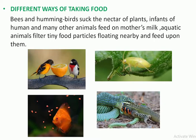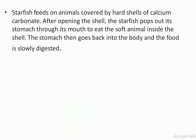The starfish feeds on animals covered by the hard shells of calcium carbonate. After opening the shell, the starfish pops out its stomach through its mouth to eat the soft animal inside the shell. The stomach then goes back into the body and food is slowly digested.